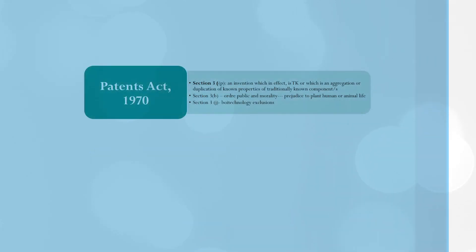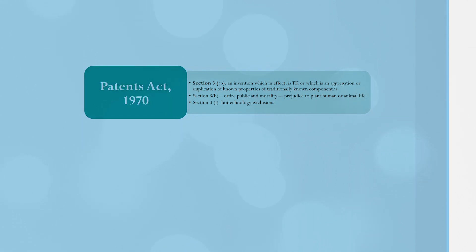The Patents Act is one of the important pieces of legislation that allows you to create a framework that can avoid misappropriation of traditional knowledge and associated biological diversity. Most important is Section 3(p), under which an invention which in effect is traditional knowledge, or which is a mere aggregation or duplication of known properties of traditionally known components, will not be granted a patent.